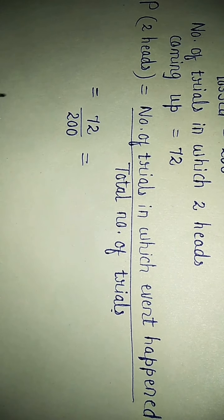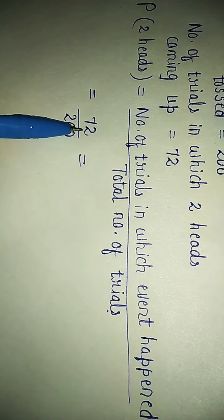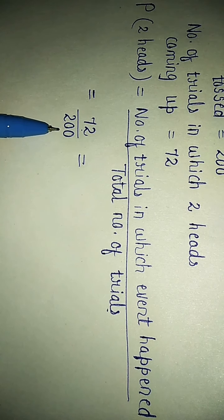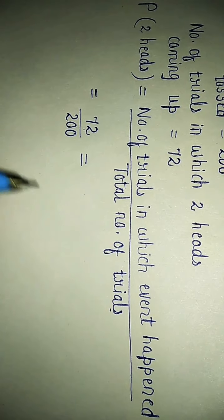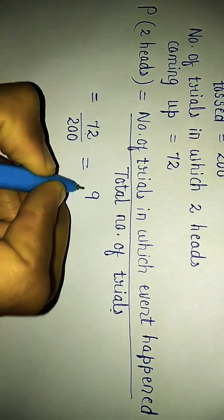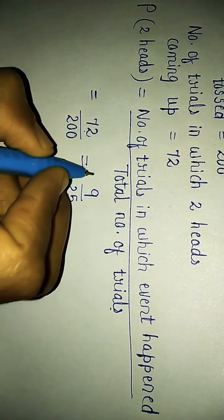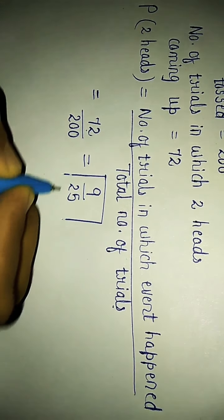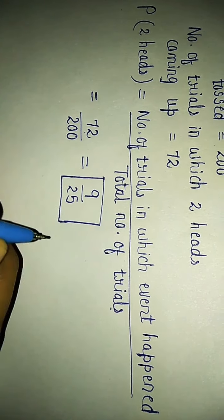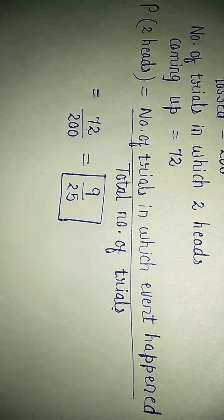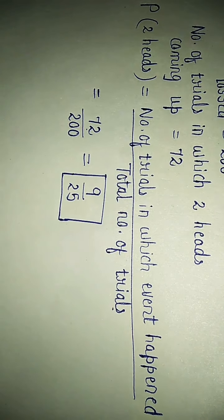If you will simplify this further, you will get 8 nines as 72. 8 multiplied with 25 is 200. So, you will get answer as 9 divided by 25. So, this is the probability of 2 heads coming up when 3 coins are tossed simultaneously. This is about Question Number 4.